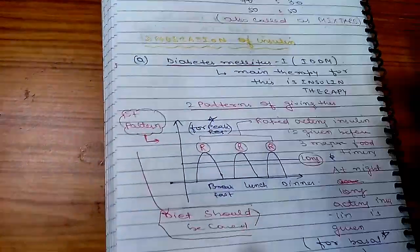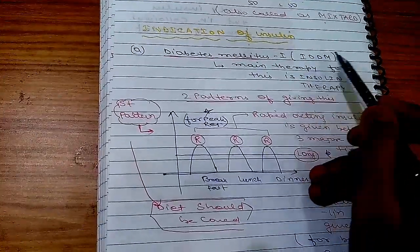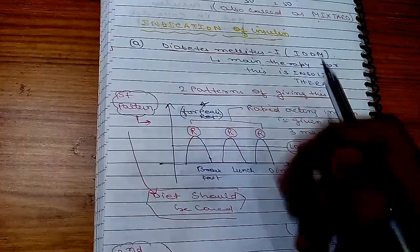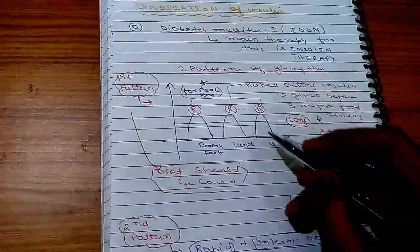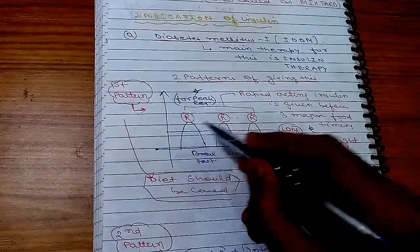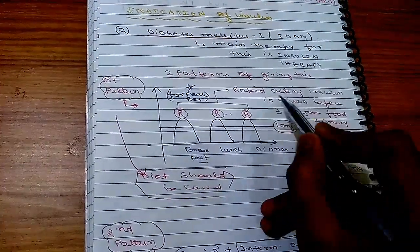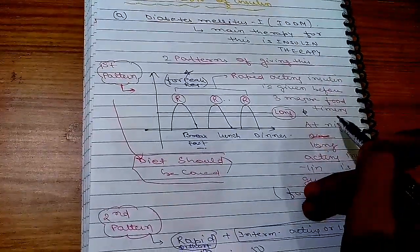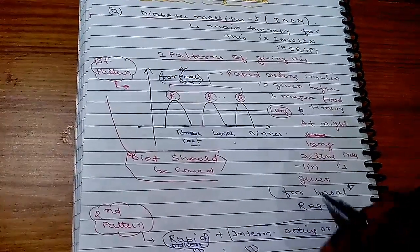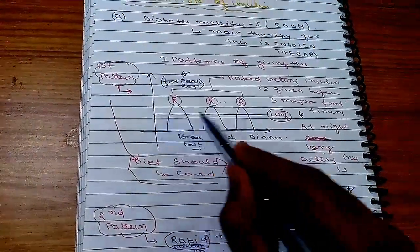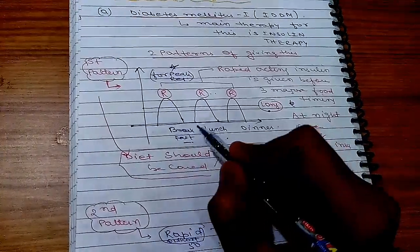Indications of insulin: First, diabetes mellitus type 1 — the main therapy is insulin therapy. There are two patterns of administration. In Pattern 1, rapidly acting insulin is given three times before breakfast, lunch, and dinner, and long acting insulin is given at night for basal requirement. In this pattern, diet between meals must be carefully controlled — no food between breakfast and lunch or lunch and dinner.